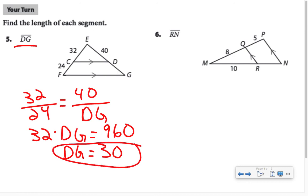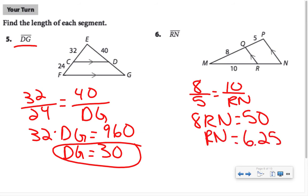Another example like this: 8 over 5 will equal 10 over RN. When we cross-multiply, we have 8 times RN equals 50. Divide both sides by 8, and the length of RN is 6.25.